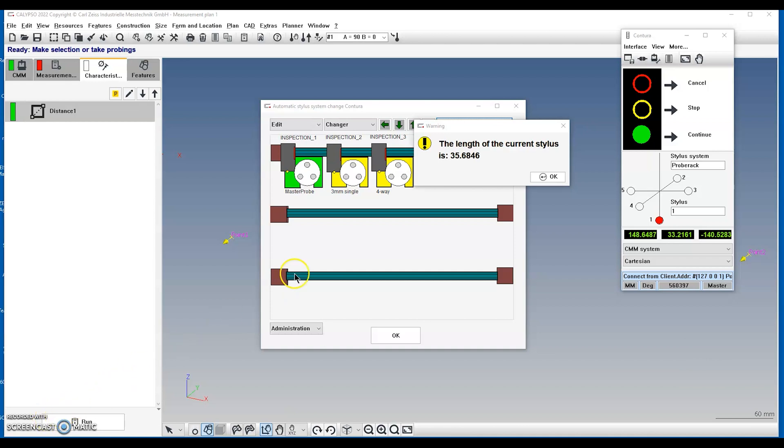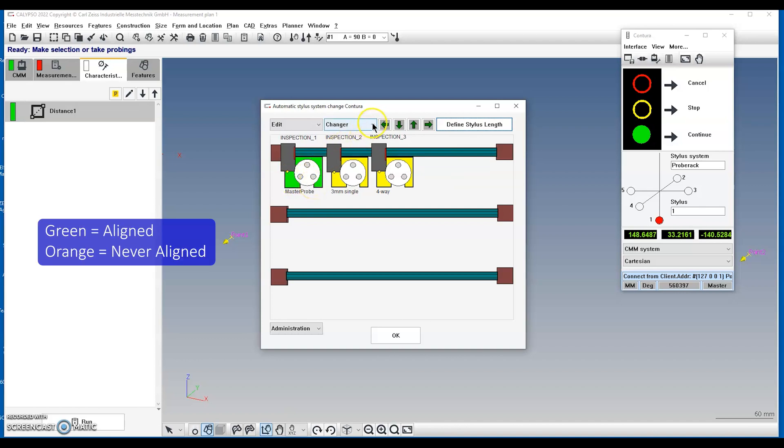Left click on the far left holder. It should align green. If it's orange, the tool rack was never aligned.